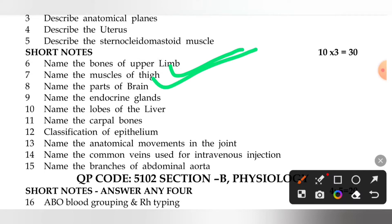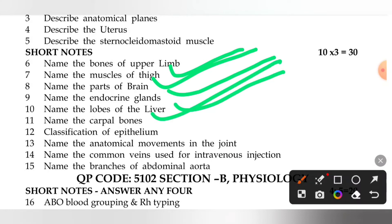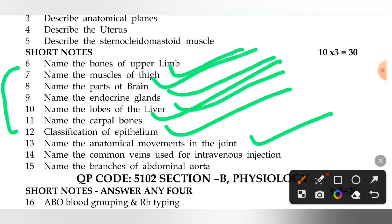You need the parts of the brain, the endocrine glands, the lobes of the liver, and the carpal bones. For naming questions: name the types of epithelium, name the anatomical movements of the joint, name the common veins used in intravenous injection, and name the branches of the abdominal aorta.